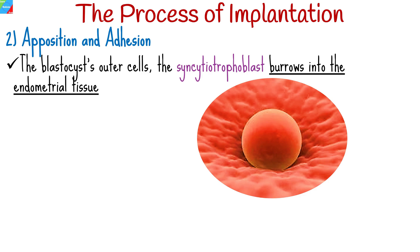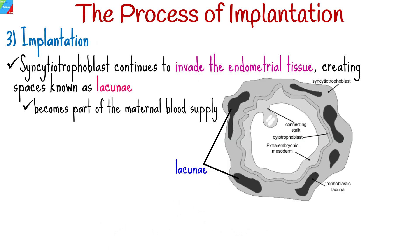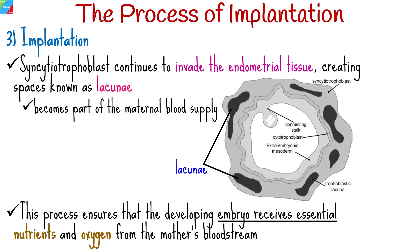The process of apposition and adhesion between the trophoblast and the endometrial lining is critical for successful implantation. Once adhesion occurs, the syncytiotrophoblast continues to invade the endometrial tissue, creating spaces known as lacunae, which will eventually become part of the maternal blood supply. This process ensures that the developing embryo receives essential nutrients and oxygen from the mother's bloodstream.